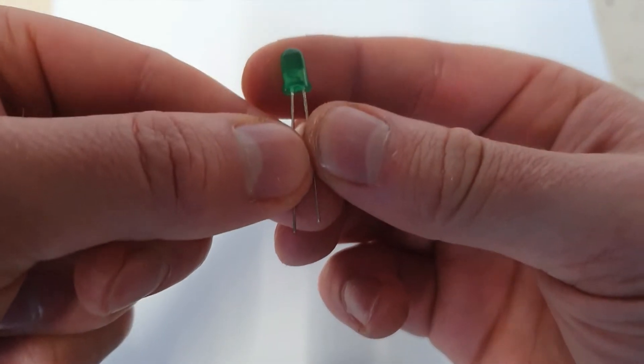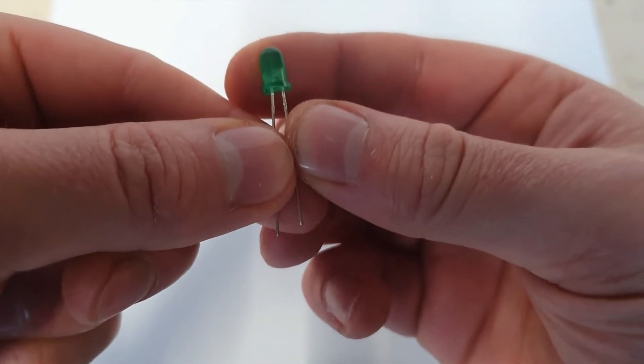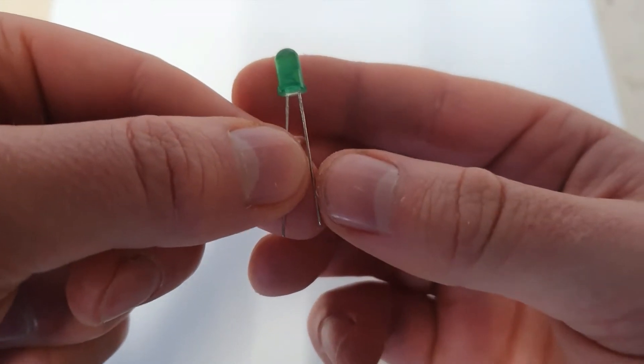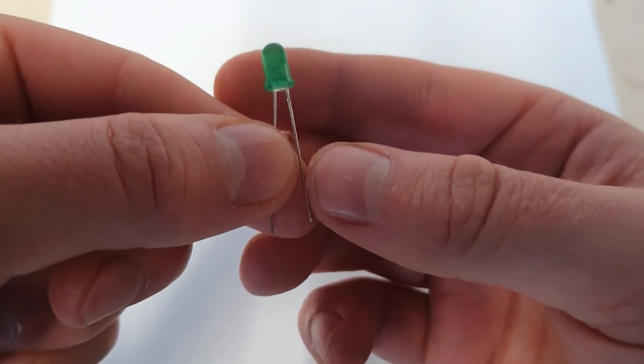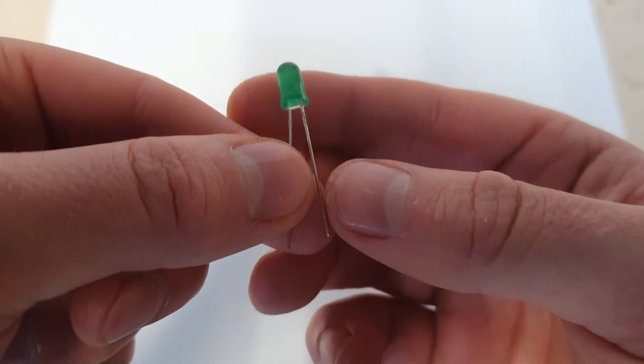Our longer leg is our positive leg or our anode, and our shorter leg is our negative leg or our cathode.